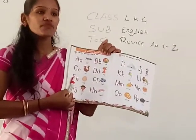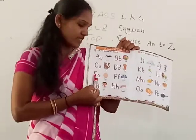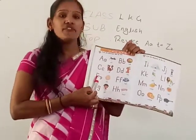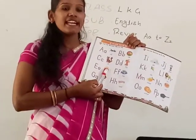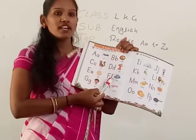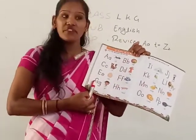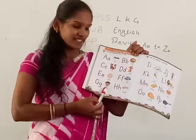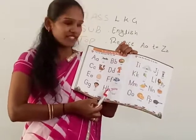Repeat again. Say it loudly. E for? Egg. Egg. F for Fish. G for? H for?